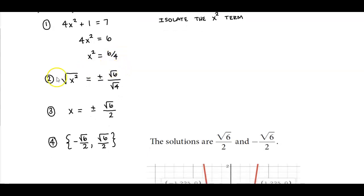Because in step 2, we're going to use the square root property by taking the square root of both sides. We have the square root of x squared equals plus or minus the square root of 6 divided by the square root of 4.